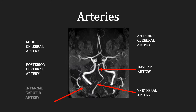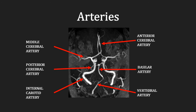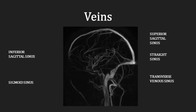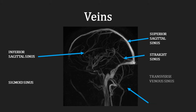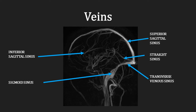The two vertebral arteries form the basilar artery. The two internal carotid arteries and the basilar artery give rise to the anterior, middle and posterior cerebral arteries, forming the circle of Willis. The brain is drained by venous sinuses and superficial and deep cerebral veins; however, we will solely focus on the venous sinuses. The inferior sagittal sinus drains into the straight sinus, and along with the superior sagittal sinus form the transverse venous sinuses on both sides of the brain. These then drain into the sigmoid sinus and from there into the internal jugular vein.